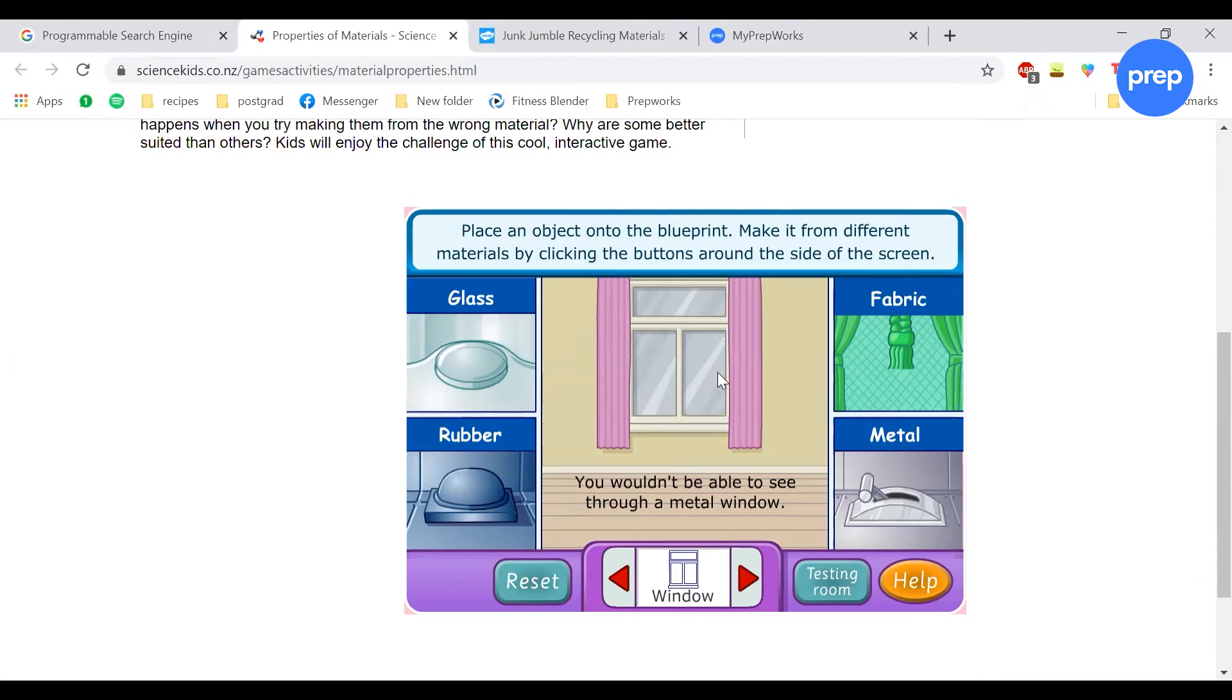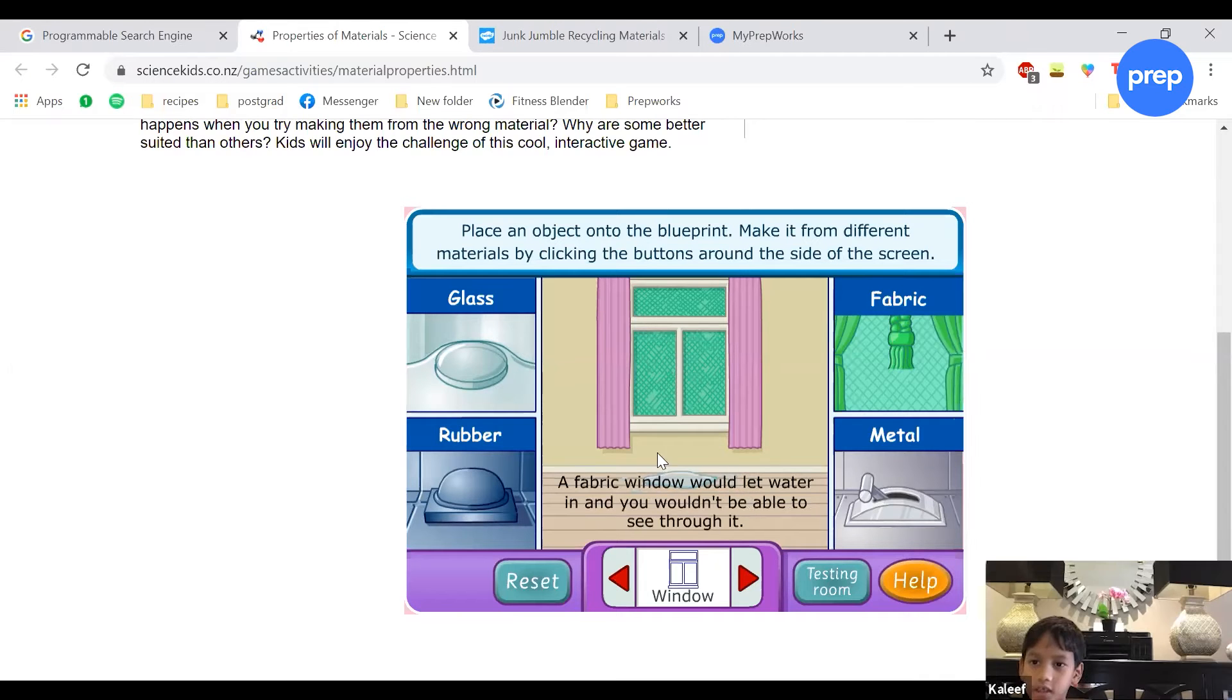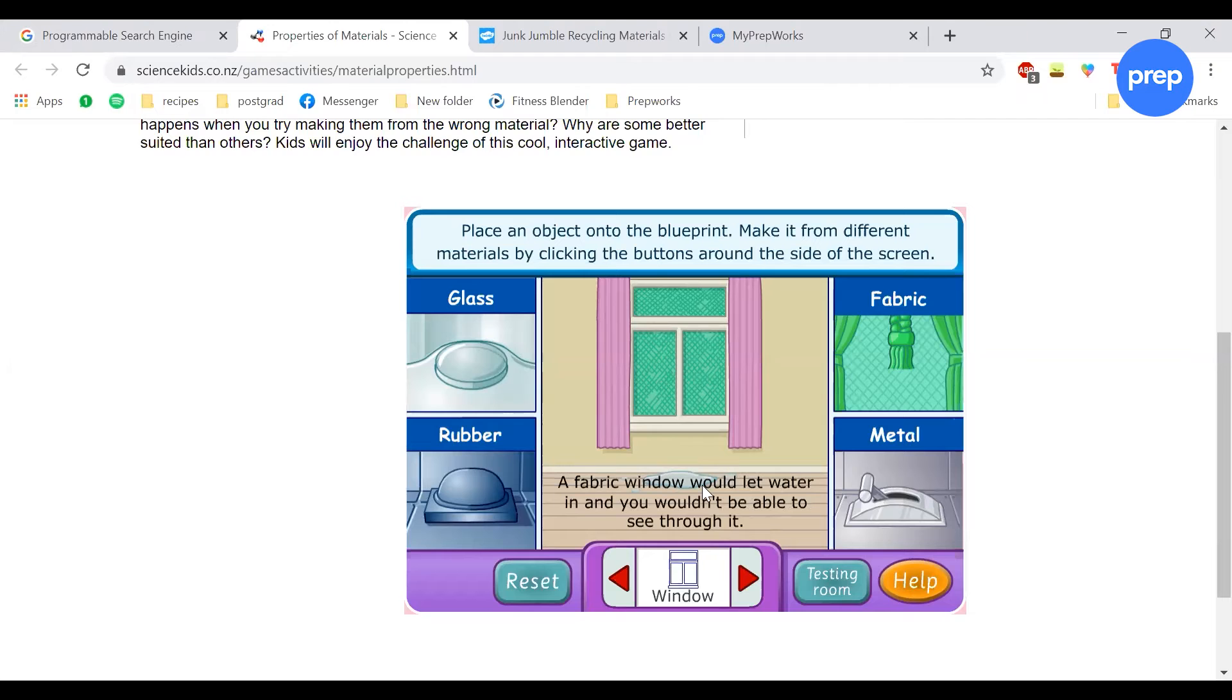see. It's not transparent, right? Okay, let's try fabric. What's wrong with the fabric window? What's on the floor there? It's wet, right? So fabric is not waterproof.